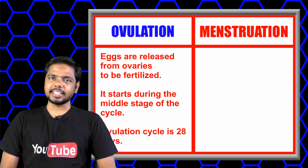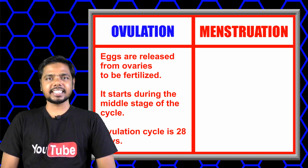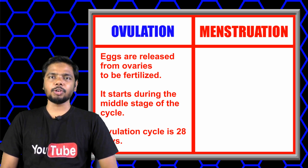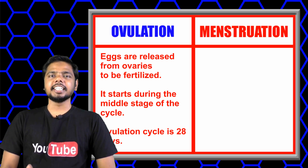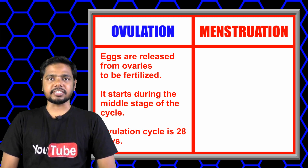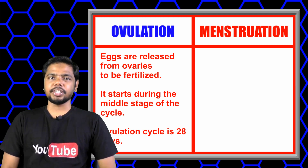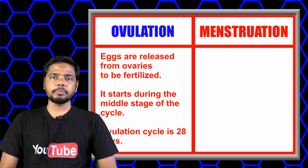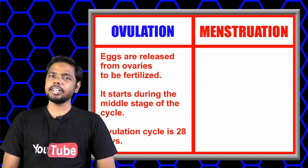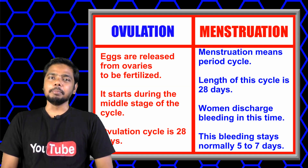Ovulation happens when eggs are released from your ovaries to be fertilized. This process starts during the middle stage of the women's cycle. A woman's cycle is 28 days, but it can also be 27, 29, or 30 days.